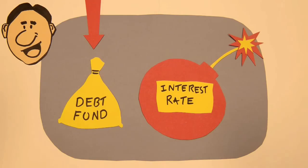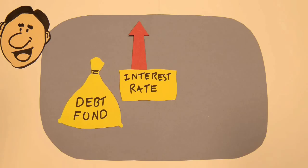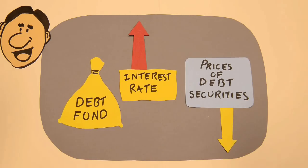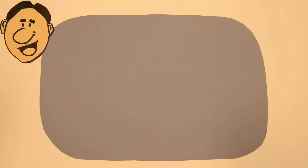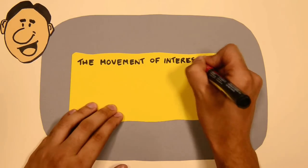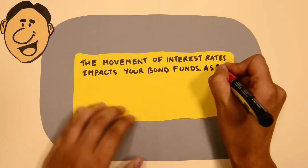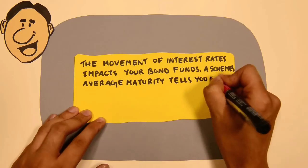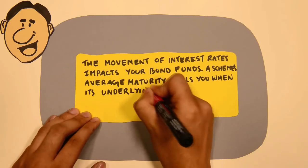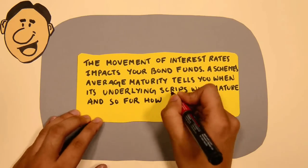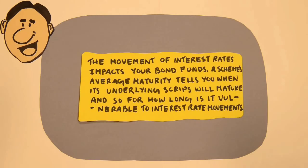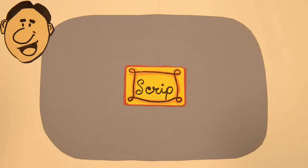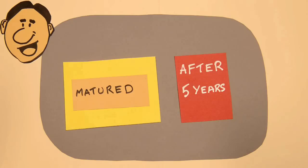Every debt fund carries interest rate risk. When interest rates go up, prices of debt securities fall, and vice versa. Clearly, the movement of interest rates impacts your bond funds. A scheme's average maturity tells you when its underlying scripts will mature and for how long it is vulnerable to interest rate movements.